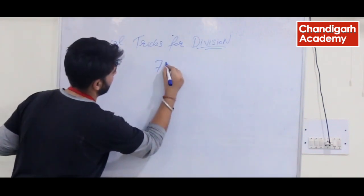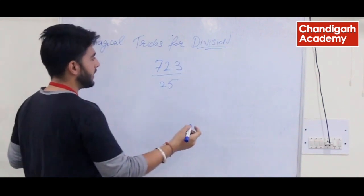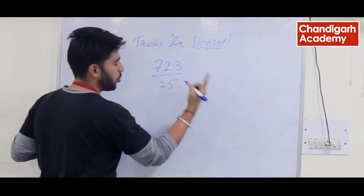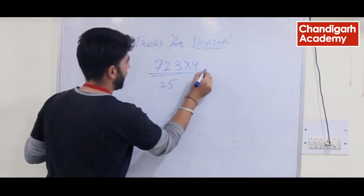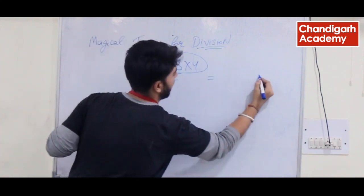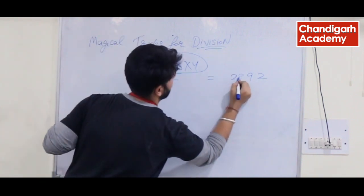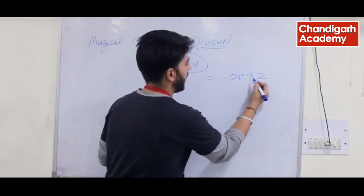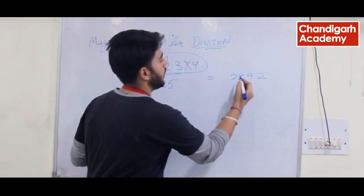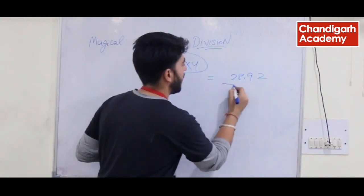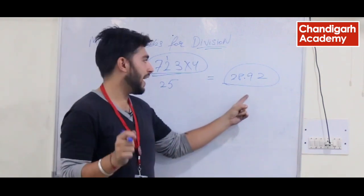So remember, you have to divide 723 by 25. What do we do? First we have to multiply it by 4. If we multiply by 4: 4×3 is 12, carry 1; 4×2 is 8 and 1 is 9; 4×7 is 28. Now we leave 2 digits at the end and put a decimal point. When we divide 723 by 25, the answer is 28.92.